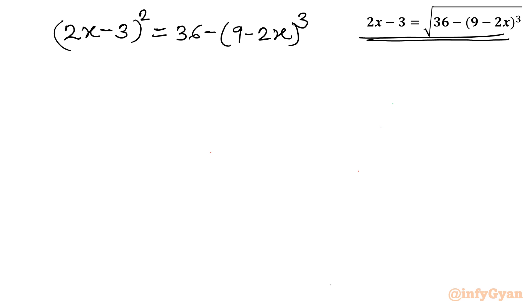Now I will give substitution straight away, but before that I will take minus common from this bracket. So 2x minus 3 whole square equals 36, and once you take minus common, power is odd, so it will become plus 2x minus 9 whole cube.